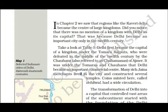Delhi first became the capital of a kingdom under the Tomar Rajputs. In the middle of the 12th century, the Chauhans defeated the Tomars. It was under the Tomars and Chauhans that Delhi became an important commercial center. Many rich Jain merchants lived in this city and constructed several temples. Coins minted here, known as 'Delhiwali,' had wide circulation.